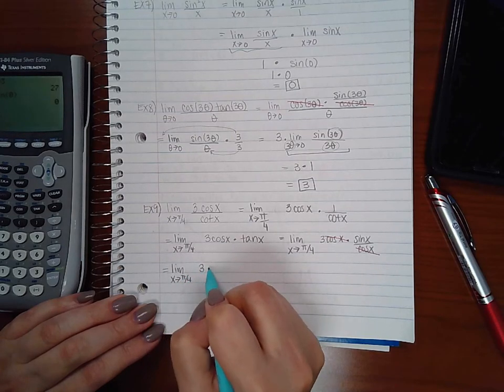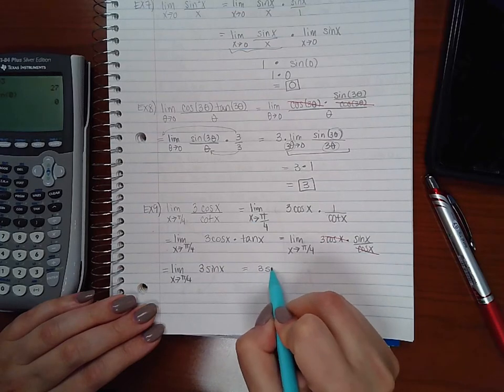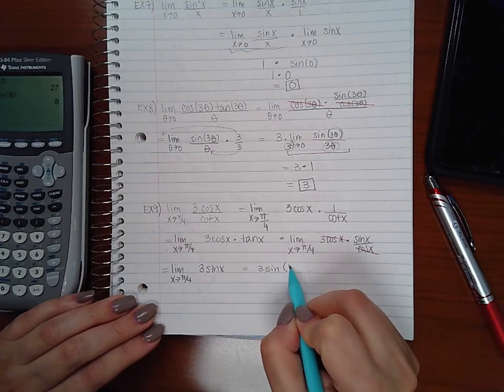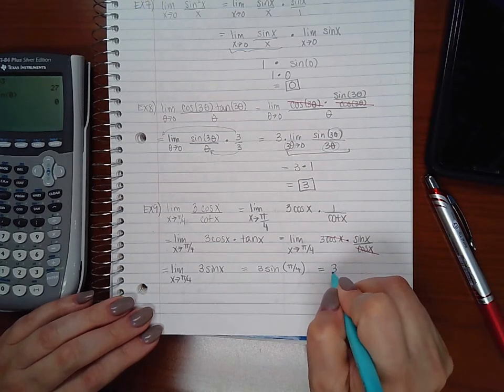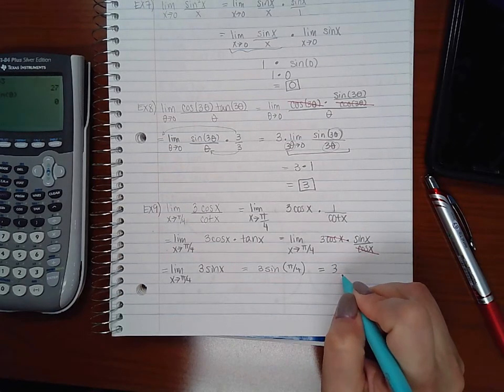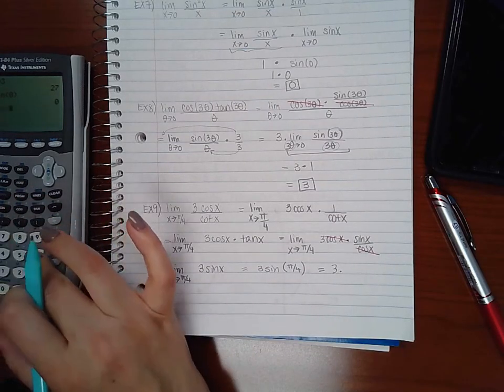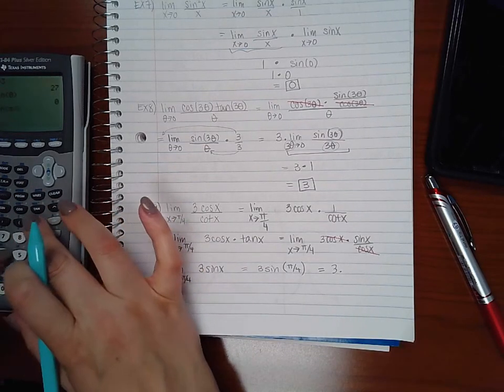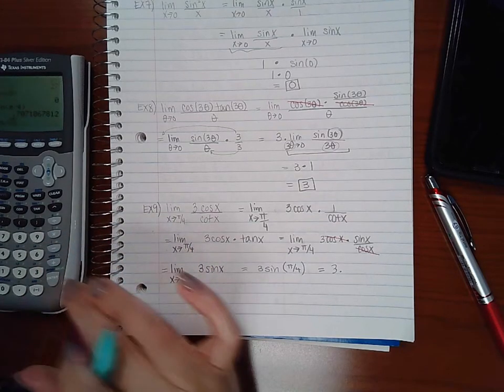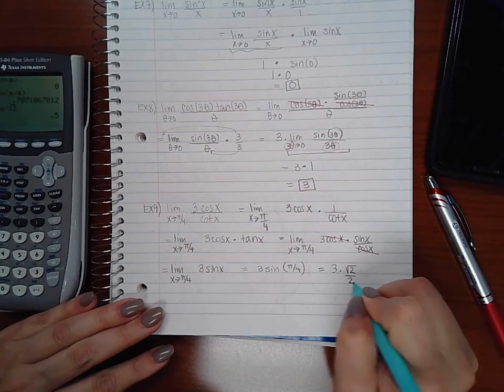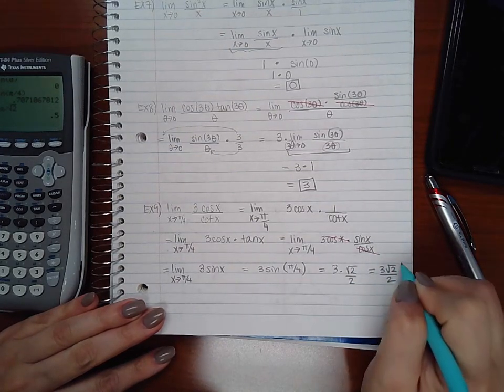We get 3 sine of x and now we can do direct substitution, so we do sine of pi over 4 and we get 3 times and I believe that is square root of 2 over 2. Yes. So we end up with 3 square root of 2 over 2.